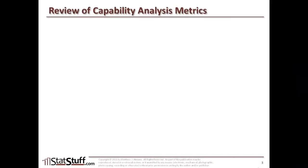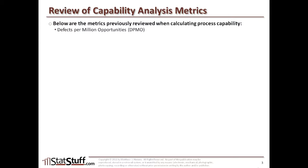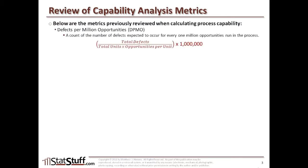Let's quickly review some of those capability analysis metrics from the prior lesson. First is DPMO — Defects Per Million Opportunities — which reflects the count of defects expected to occur for every one million opportunities that run through the process. We calculate that by taking the total number of defects and dividing by the total number of units times the total opportunities per unit, giving us an overall percentage of what's defective. We multiply that by one million to figure out the number of defects per million opportunities.